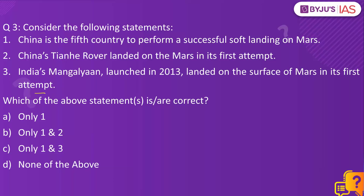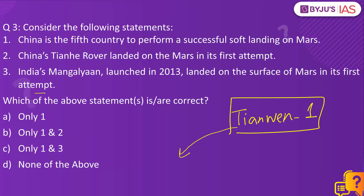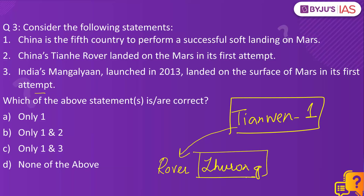China's Mars mission is Tianwen-1, and this Mars mission has a rover named Zhurong. So rover Zhurong is part of China's Mars mission Tianwen-1. China's Tianhe rover landed on Mars in its first attempt is wrong — it is China's Zhurong rover, part of Tianwen-1, which landed on Mars in its first attempt. So statement two is incorrect.